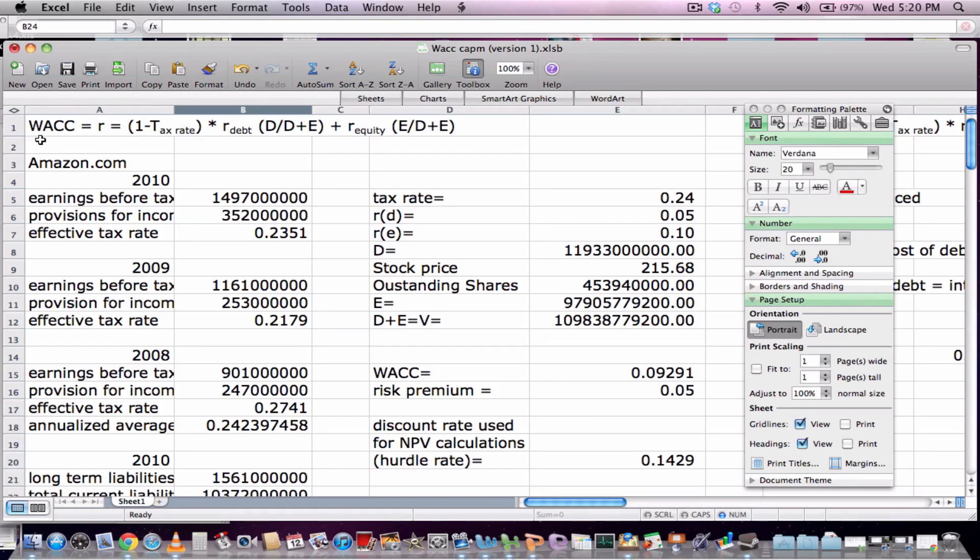Now that we've explained weighted average cost of capital, I wanted to do a real-world example of how to determine the weighted average cost of capital of a real-world firm.